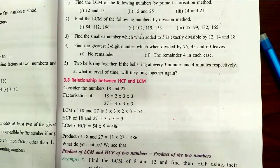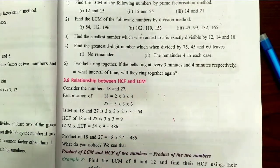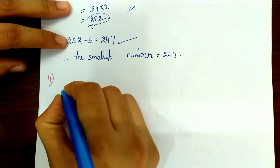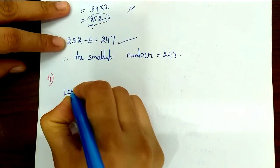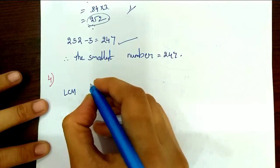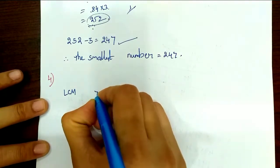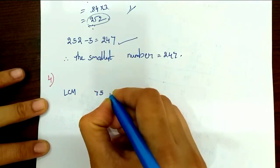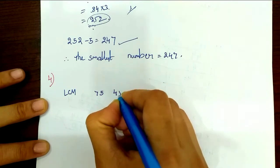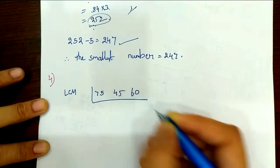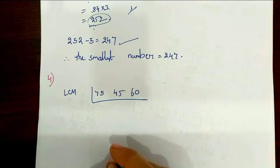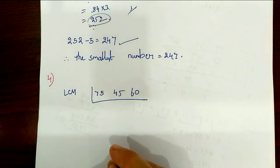Let us clarify the problem and find the LCM of 75, 45 and 60. We will divide these numbers in a table.